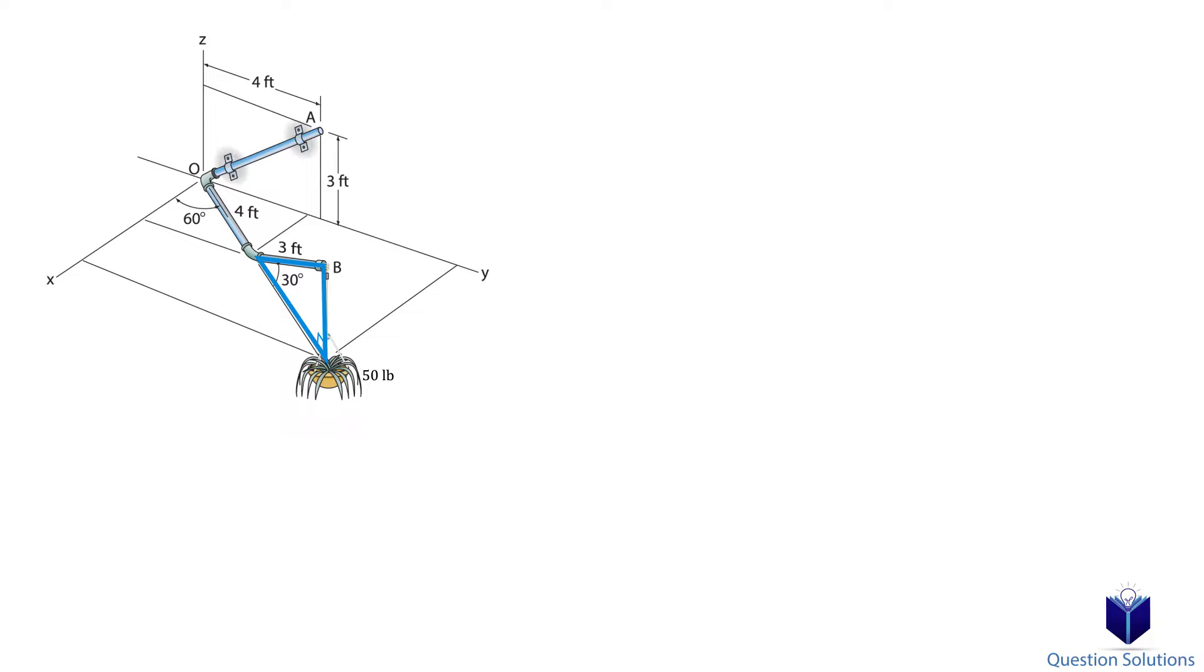The diagram for this question can be a bit confusing, almost giving the illusion that the angle at B is our right angle. However, this is not the case, as the side with the three feet is indeed our hypotenuse. A different view will make it even more clear.